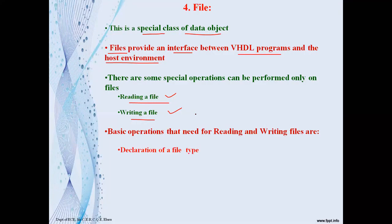To perform read and write operations, four steps are needed. First is declaration of a file type — we need to declare the type of file, for example a .txt text file. Different types of files exist on a computer, so we must first specify the file type. The second step is declaring the file — specifying the path where the file is located in the computer system.